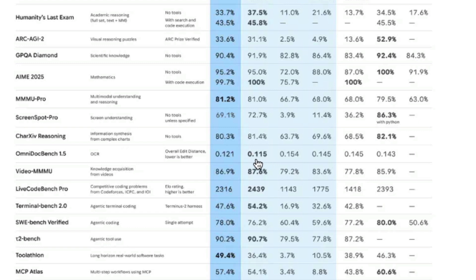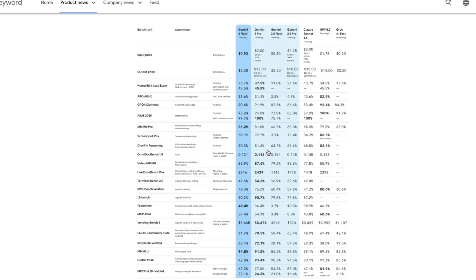What I wanted to highlight primarily is OCR — optical character recognition. On the OmniDocBench 1.5 benchmark, which measures the error distance of OCR predictions from actual ground truth, Gemini 3 Pro scored 0.115 and Gemini 3 Flash scored 0.12 — almost on par. Lower is better since it's measuring error. It's better than GPT with extra high reasoning, better than Claude Sonnet 4.5, and better than any other model available, especially considering the speed and cost.